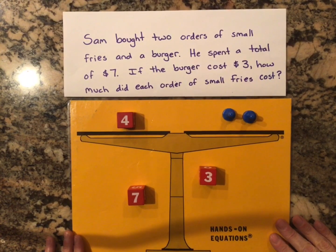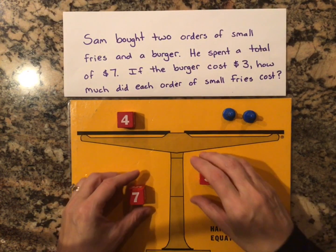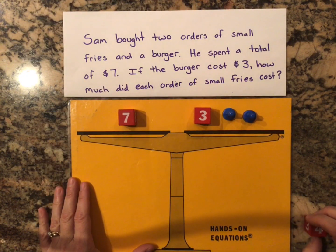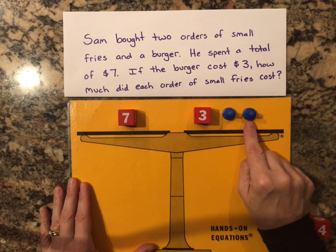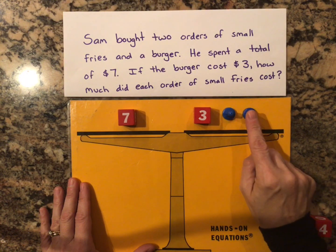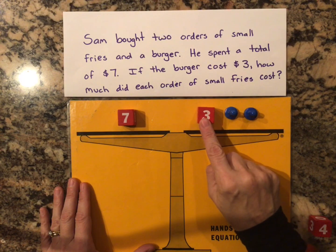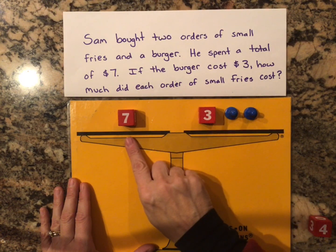Step four is to check my answer. I'm going to check by putting everything back the way it started and replacing the value for X. If each X equals 2, then 2 plus 2 is 4, plus 3 is 7, and 7 is equal to 7.